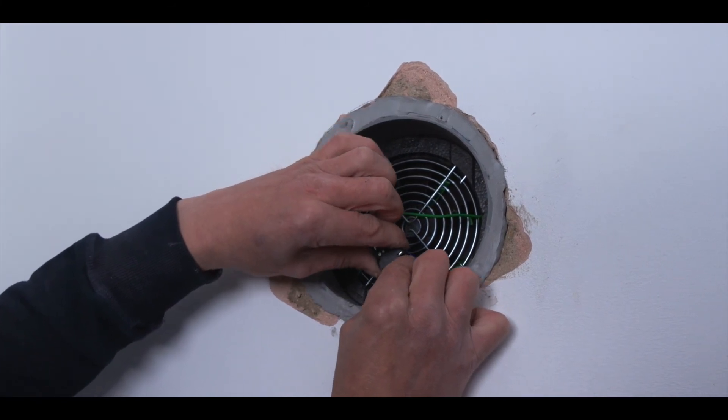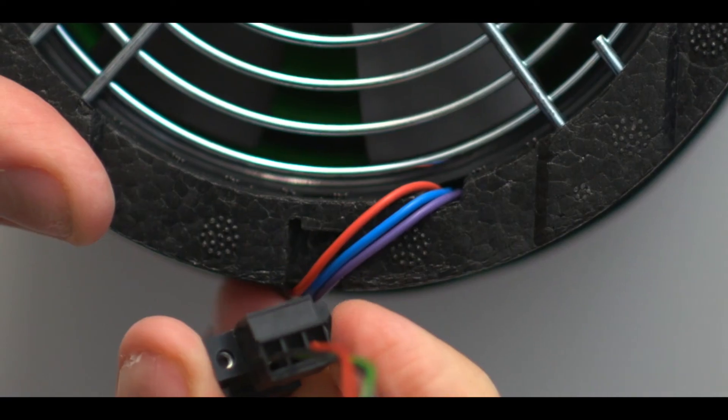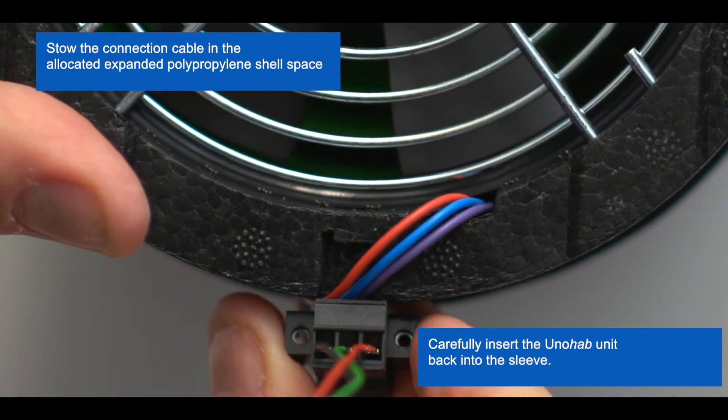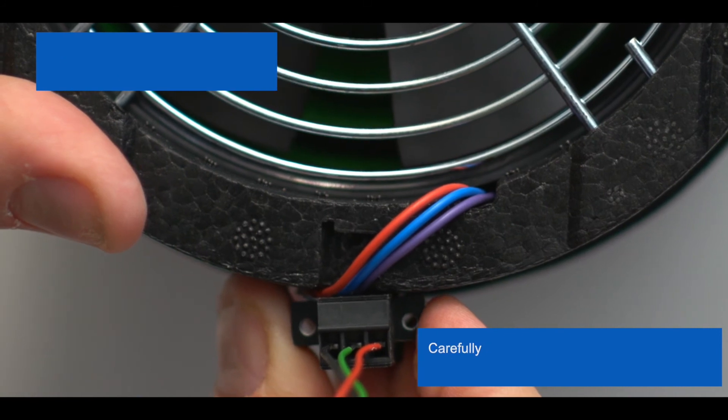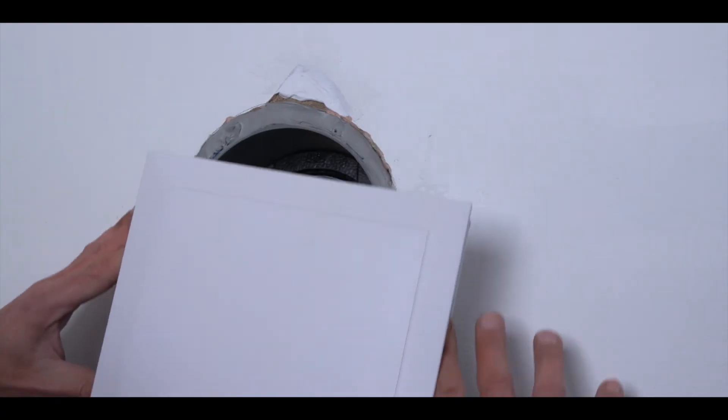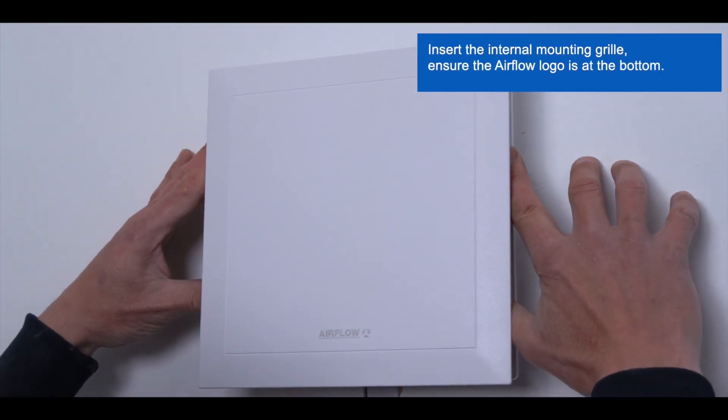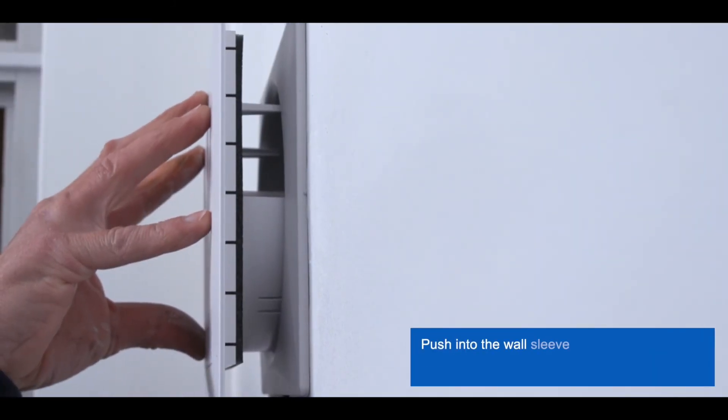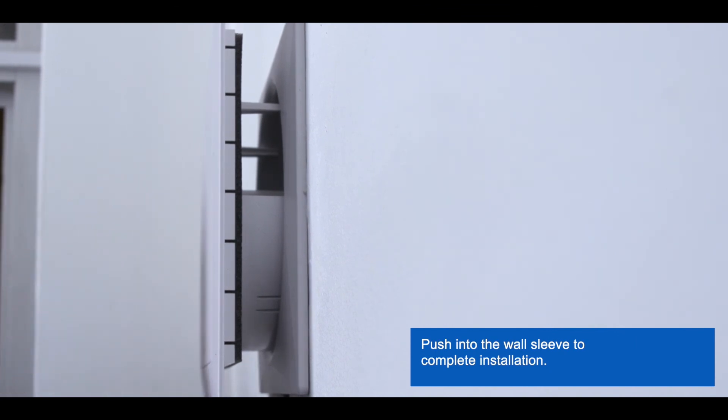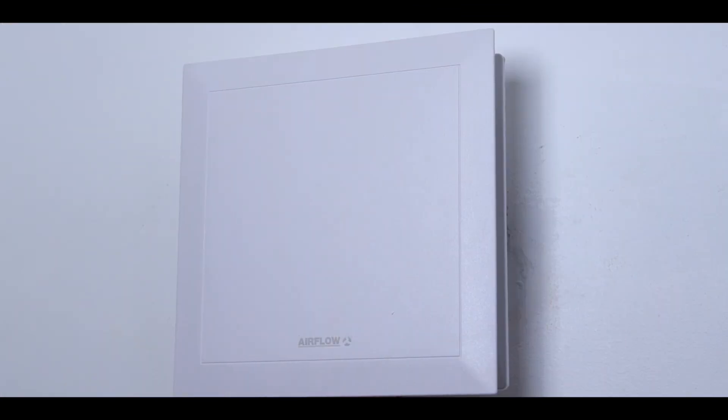Carefully insert the unahab unit back into the wall sleeve. Insert the internal mounting grill ensuring the airflow logo is at the bottom. Push back into the wall sleeve to complete your installation. The unahab unit is in the open position and ready for use.